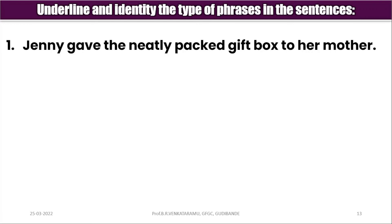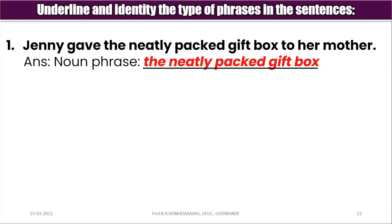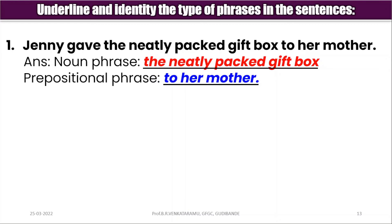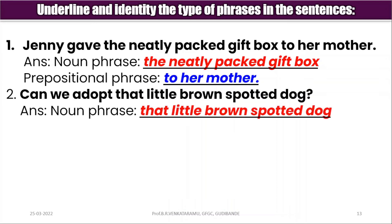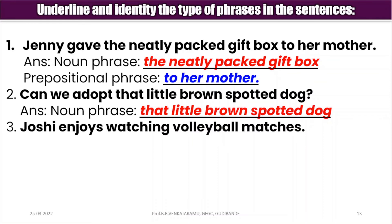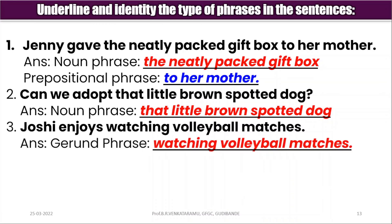Let me use some examples now. 'Jenny gave the neatly packed gift box to her mother.' In this sentence, the noun phrase is 'the neatly packed gift box,' and there is also another phrase: 'to her mother,' which is the prepositional phrase. Second: 'Can you adopt that little brown spotted dog?' — 'that little brown spotted dog' is the noun phrase. Third: 'Joshi enjoys watching volleyball matches' — 'watching volleyball matches' is a gerund phrase.